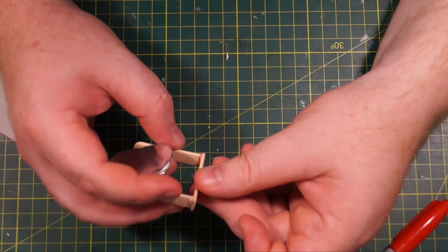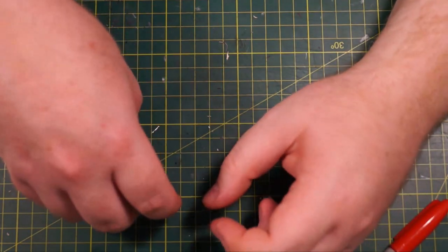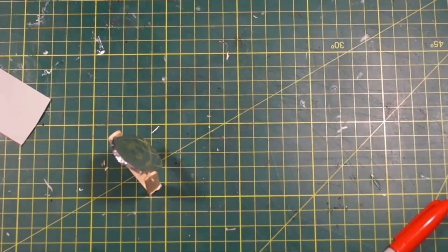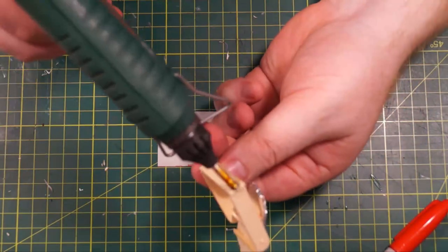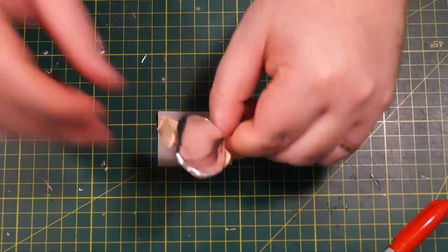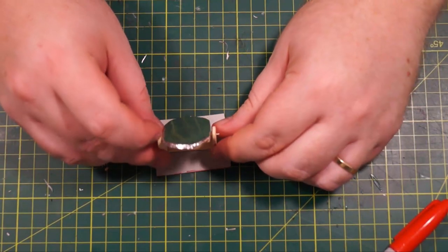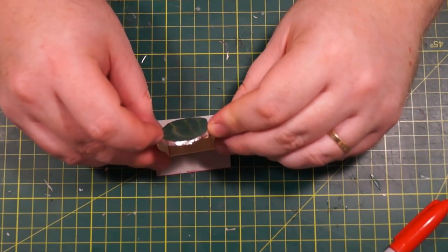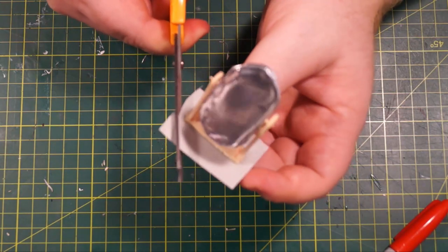We have the base stand. Now this will stand on its own, as you see here. But what we're going to do is actually create a better stand. So hot glue along the bottom onto a piece of cardstock.